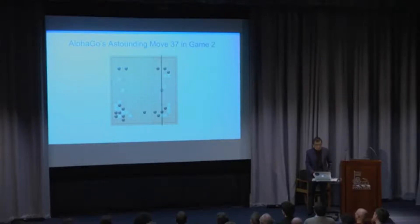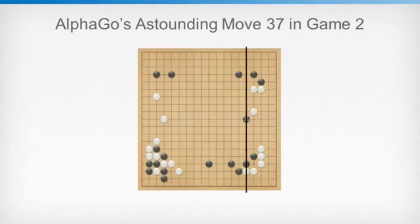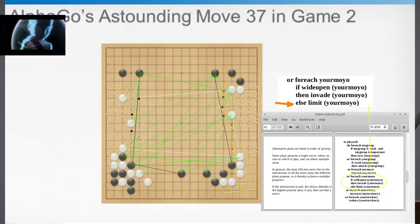But AlphaGo played on the fifth line — one line higher — to take power and influence into the center of the board. The fifth line means you're giving your opponent territory from the fourth line: a whole extra line of territory towards the side of the board, which is huge in Go. What we think this means is that for 3,000 years, humans may have been underestimating the value of power and influence to the center of the board, despite 3,000 years of professional contemplation and play — which is kind of incredible.